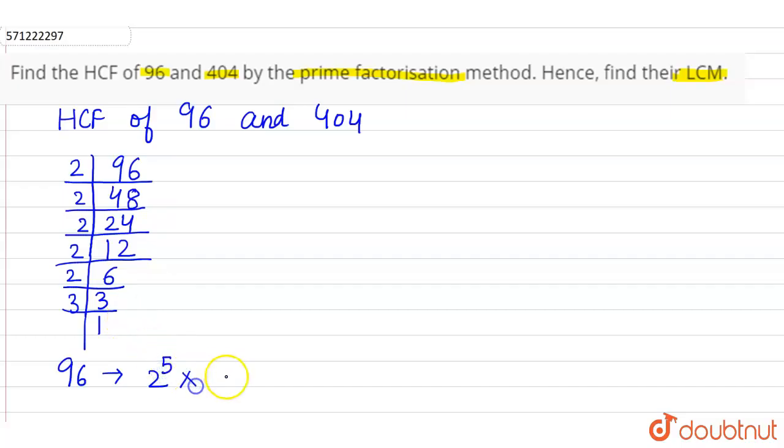Similarly, we can find the factors for 404. 2 into 202, 2 into 101. 101 is already a prime number. So the prime factors of 404 we can write as 2 raised to the power 2 and 101 raised to the power 1.